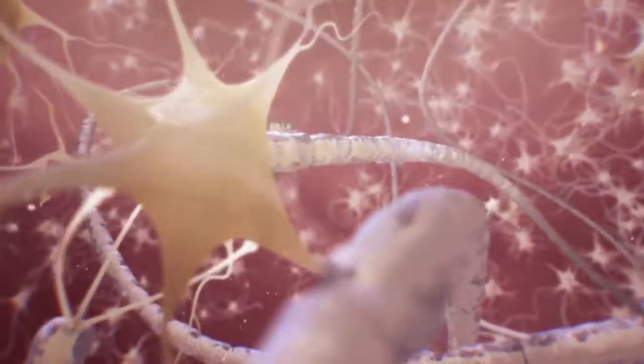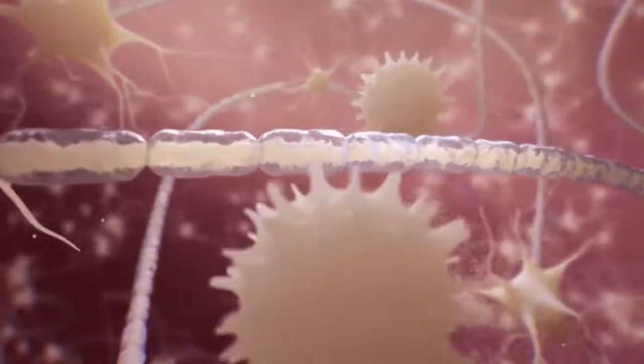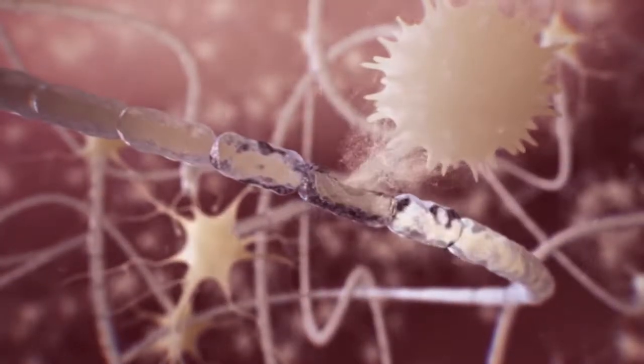The exact cause of MS is unknown, but we do know that something triggers the immune system to attack the brain and spinal cord. The resulting damage to myelin that insulates wire-like nerve fibers is a disruption of signals to and from the brain.